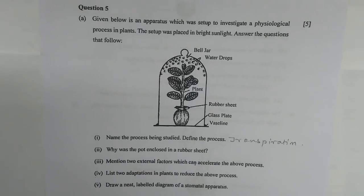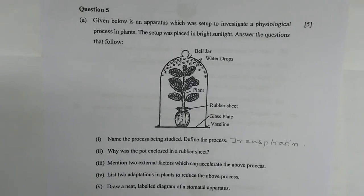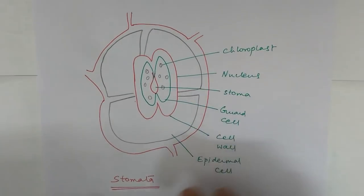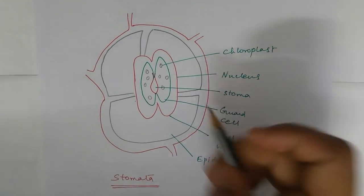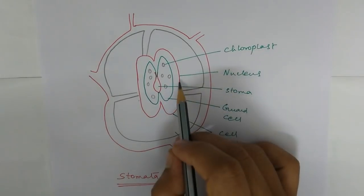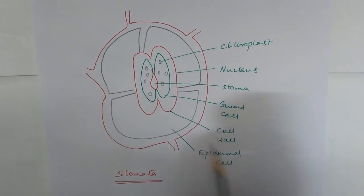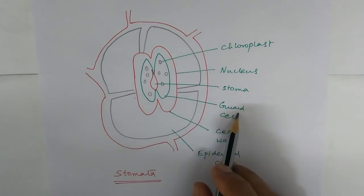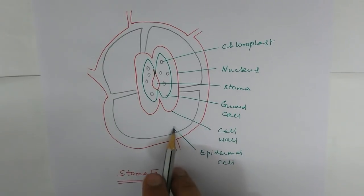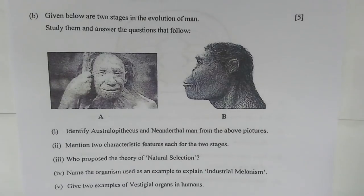Number five — draw a neat labeled diagram of a stomatal apparatus. I have drawn the structure of stomata. You can see the chloroplast, nucleus, stoma, guard cell, cell wall, and epidermal cell.